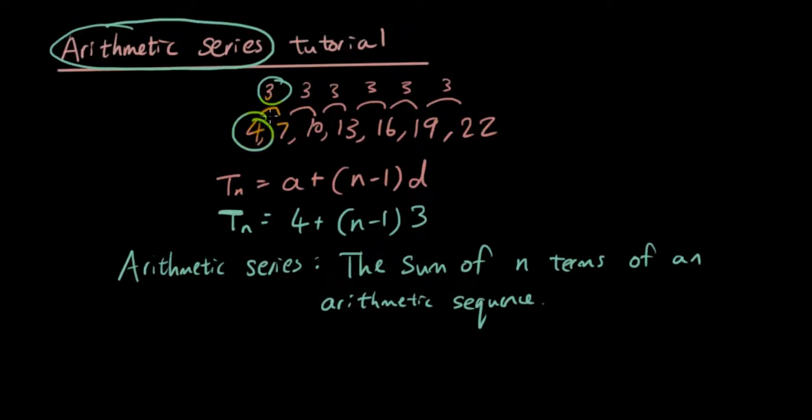So this is our sequence: 4, 7, 10, 13, 16, 19, 22. And how many terms are here? 1, 2, 3, 4, 5, 6, 7. There are 7 terms here. Let's just do 6 terms. So if I ask you what S6 is equal to.